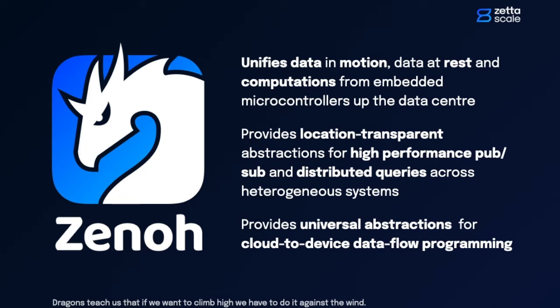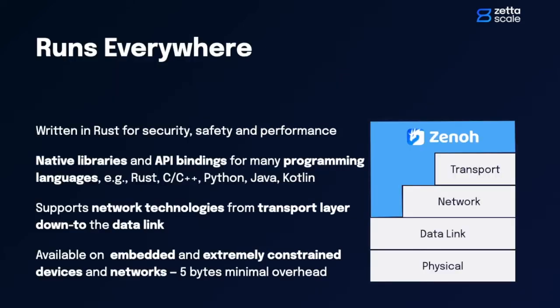Zeno provides location-transparent abstractions for high-performance publish-subscribe, as well as a mechanism for distributed queries. Zeno has been written in Rust because we care about security, safety, and we are obsessed by performance. We provide language bindings in various different languages including C, C++, Python, and Kotlin.